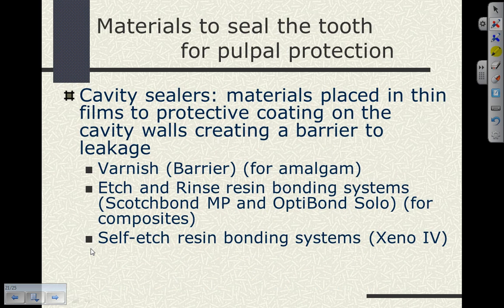When we talk about materials to seal the tooth for pulpal protection, one of the materials is called a cavity sealer — by definition, a material placed very thinly as a film, as a protective coating on cavity walls, creating a barrier to leakage. For amalgam, we use cavity varnish as the barrier. Although the trend today for well-placed, well-condensed amalgams is that there's no need for cavity varnish, as a beginner placing amalgam restorations it would benefit you to place the varnish because your initial adaptation of amalgam to cavity walls will not be as optimal.